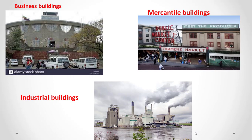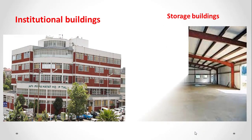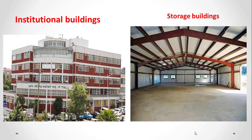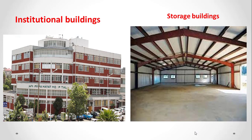Examples of industrial buildings include assembly plants. We also have institutional buildings, which are used for purposes such as medical or other treatments, or for penal and correctional detention. The best examples are hospitals and prisons. Any building used for storage or sheltering of goods, merchandise, or agricultural products is classified as a storage building.